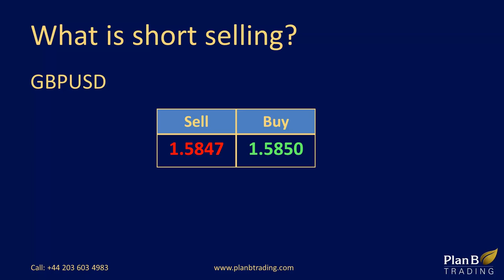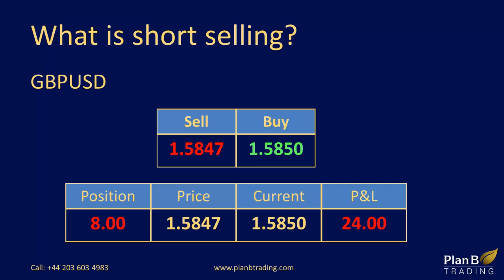Suppose I were to go short on cable — that means selling cable at £8 a pip. Remember, a pip is the fourth decimal place on this currency pair. As I sell the currency, my position is shown along with the price I took the trade. My exit price is shown, which is the price I can currently buy at. A running profit and loss is shown too.